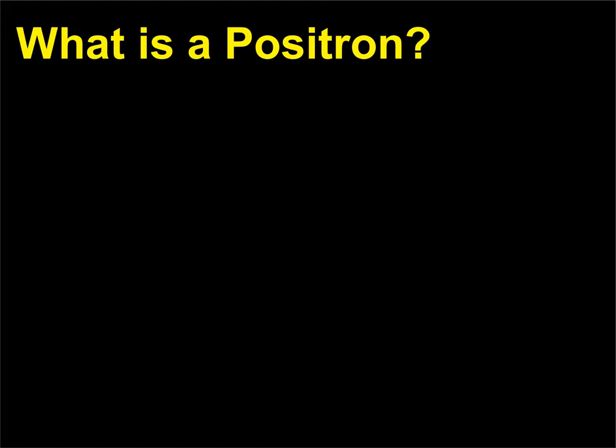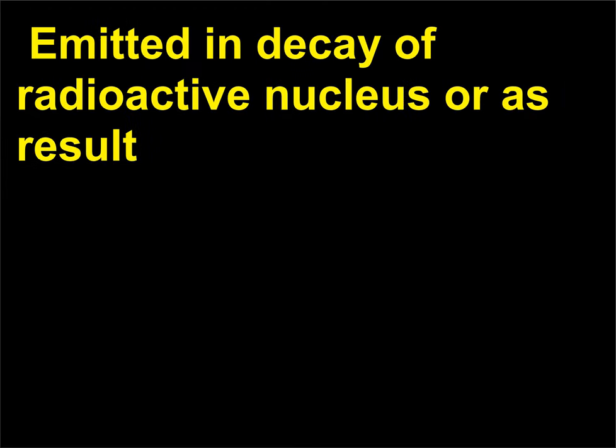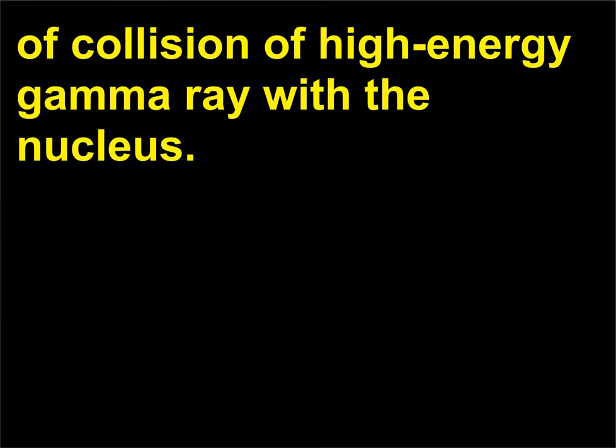What is a positron? A positron is the antimatter form of the electron with the same mass but a positive charge. It is emitted in the decay of a radioactive nucleus or as a result of the collision of a high-energy gamma ray with the nucleus.